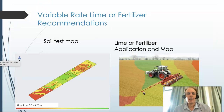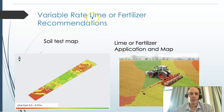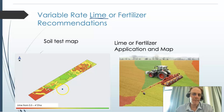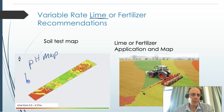An excellent example of variable rate application is lime and fertilizer recommendations — liming is very popular. To use variable rate, we first go to the field and soil sample. I'll place some dots here where we grid soil sample. Based on that grid soil sample, we produce a pH map. Based on the pH map, we then come up with a lime recommendation and prescription map.